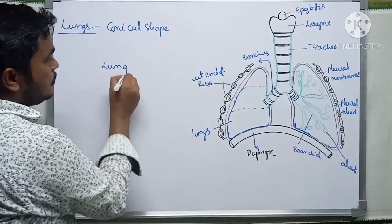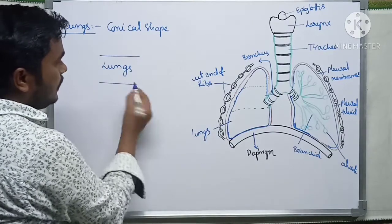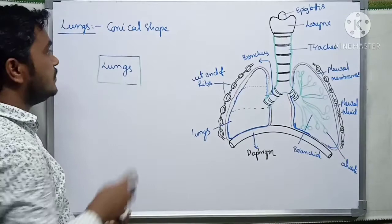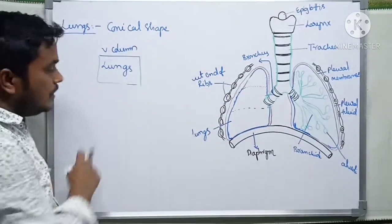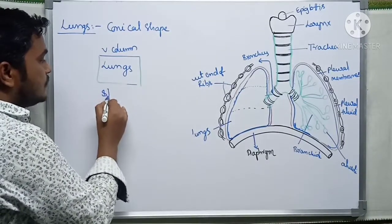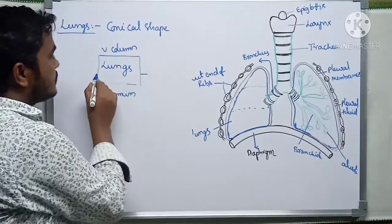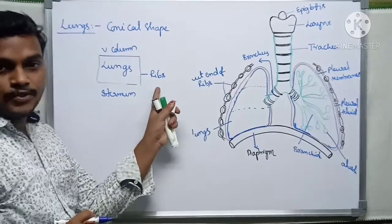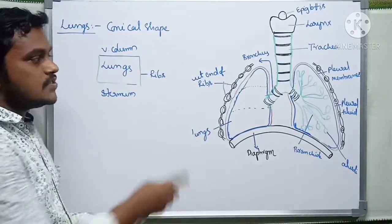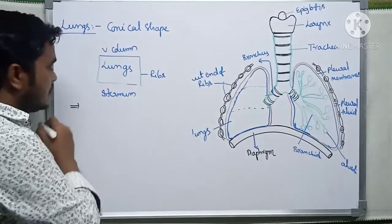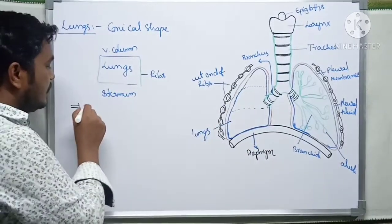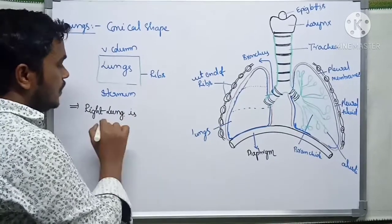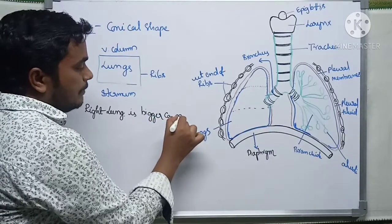To recap the protection of lungs: the dorsal side is protected by the vertebral column, the ventral region by the sternum, the lateral regions by the ribs, and the inferior region by the diaphragm. The right lung is bigger compared to the left lung.